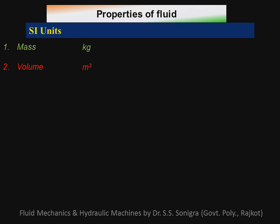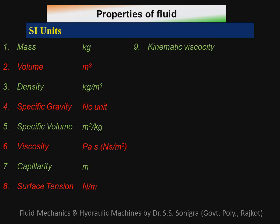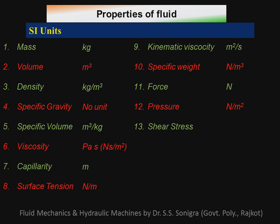Some SI units to always remember: mass — kilogram; volume — meter cubed; density — kilogram per meter cubed; specific gravity — no unit; specific volume — meter cubed per kilogram; viscosity — Pascal-second or Newton-second per meter squared; capillarity — meter or centimeter of fluid; surface tension — Newton per meter; kinematic viscosity — meter squared per second; specific weight — Newton per meter cubed; force — Newton; pressure — Newton per meter squared or Pascal; shear stress — Newton per meter squared or Pascal; work — Newton-meter or Joule; power — Newton-meter per second or Joule per second or Watt; energy — Joule.